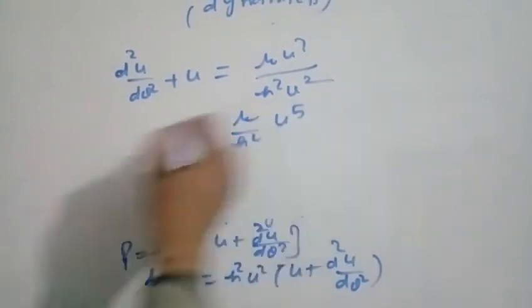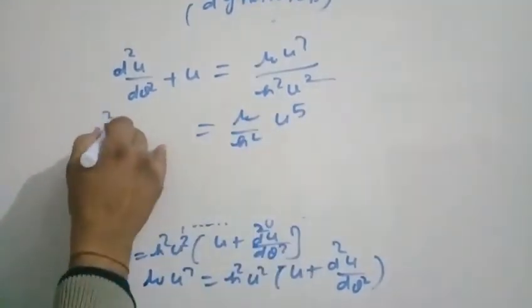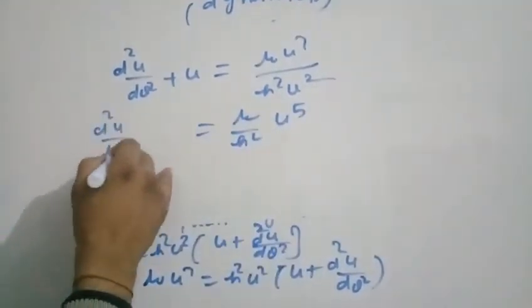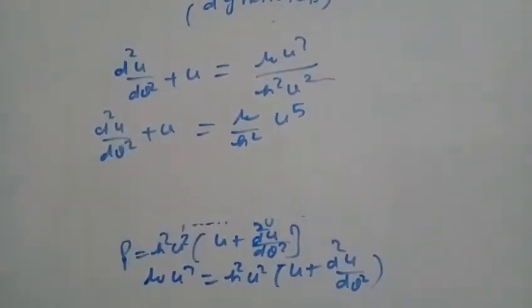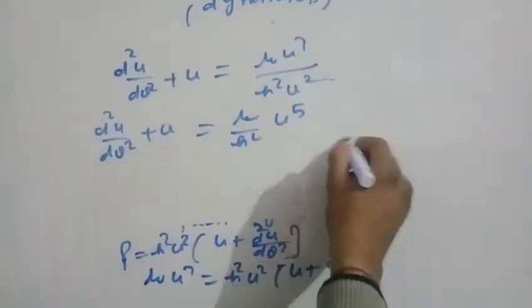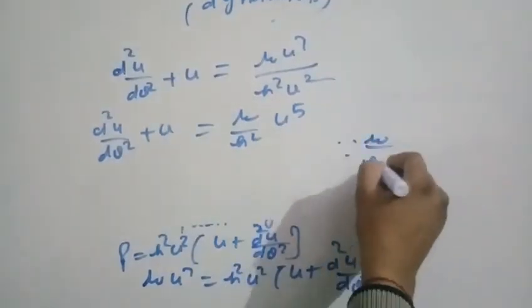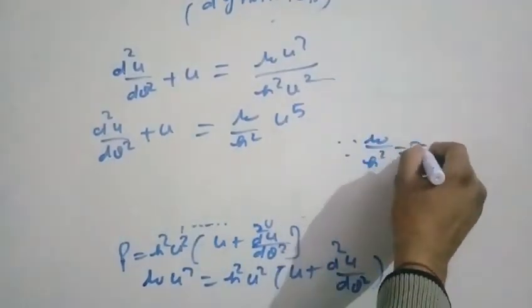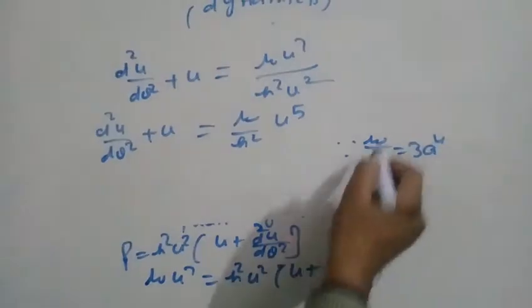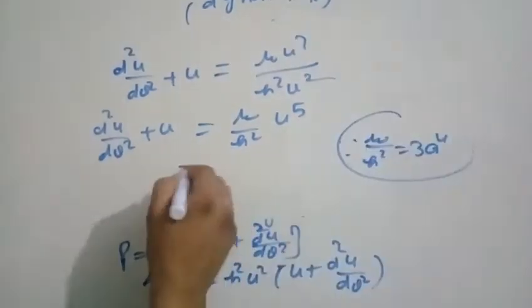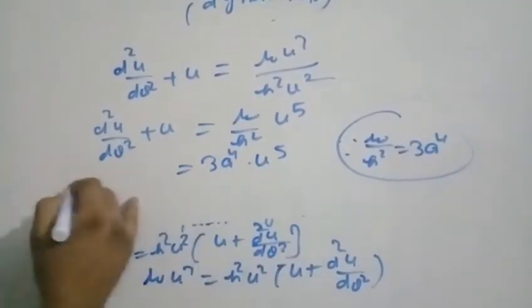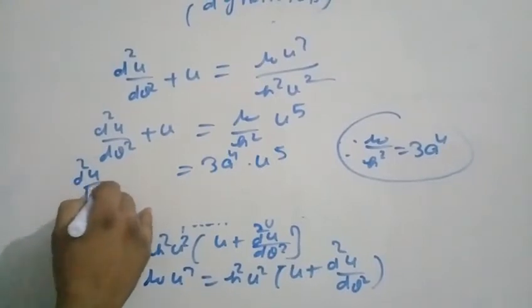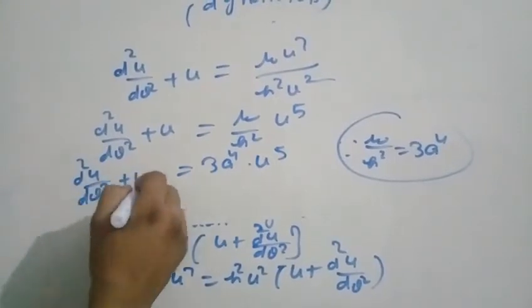The equation becomes: d²u/dθ² + u = μu⁵/h². Substituting the value μ/h² = 3a⁴: d²u/dθ² + u = 3a⁴·u⁵.